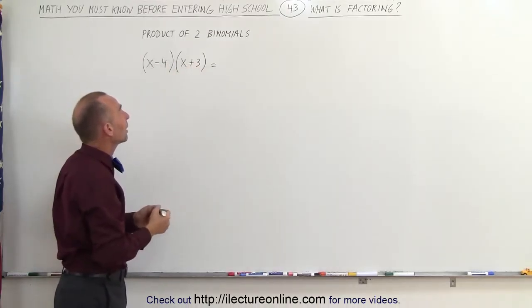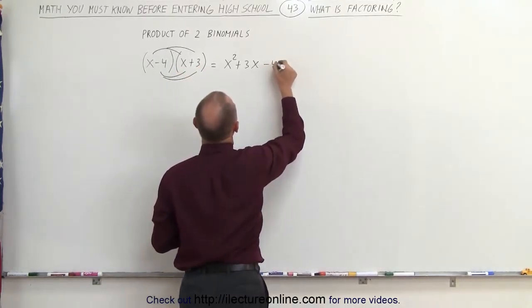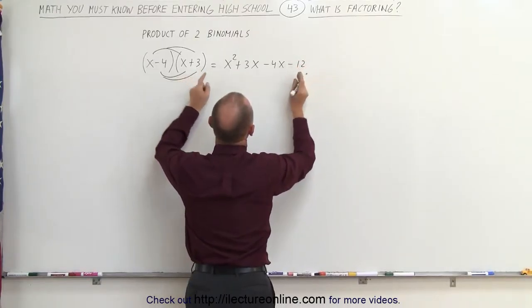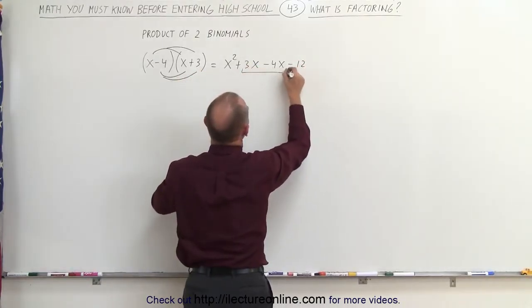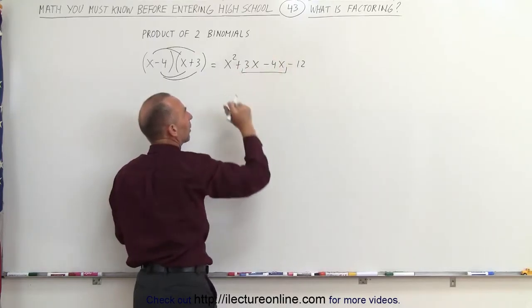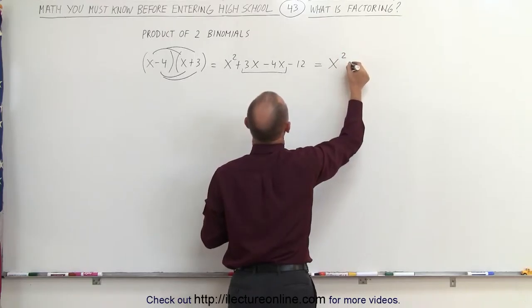When we multiply them together we get the following thing. We're going to use the distributive property, multiplying x times x and x times 3. This gives us x squared plus 3x, and then we'll multiply the minus 4 times x and plus 3. We get minus 4x and minus 4 times plus 3 gives me minus 12.